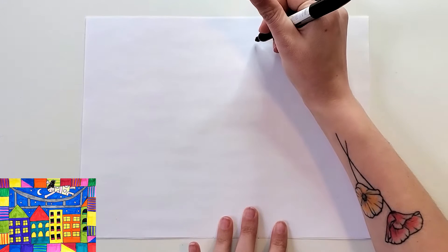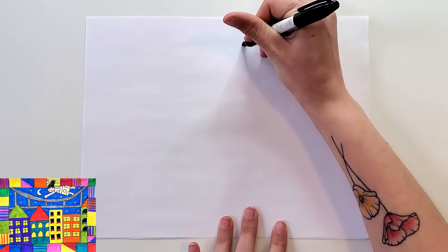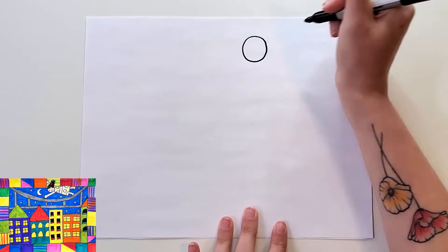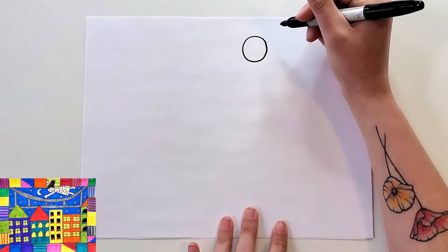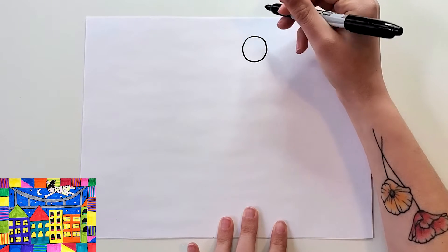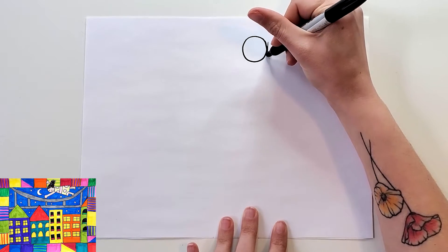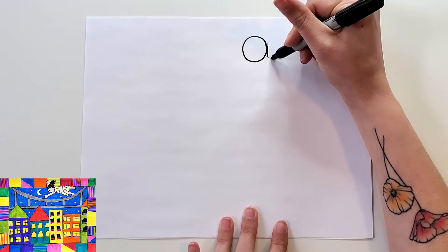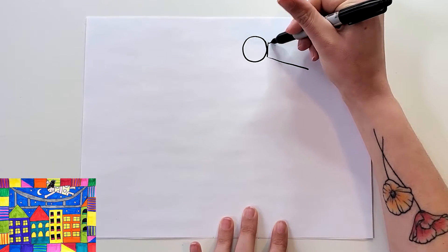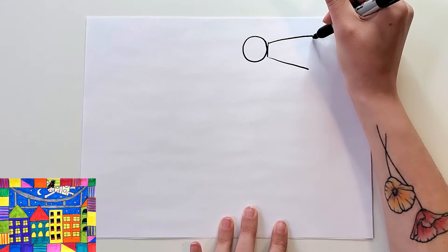So up near the top you're going to start with a circle for the head. And then for the body I am going to do a shape kind of like for the dress. So I'm gonna do a straight line, two angled lines like this, and then a curved line.